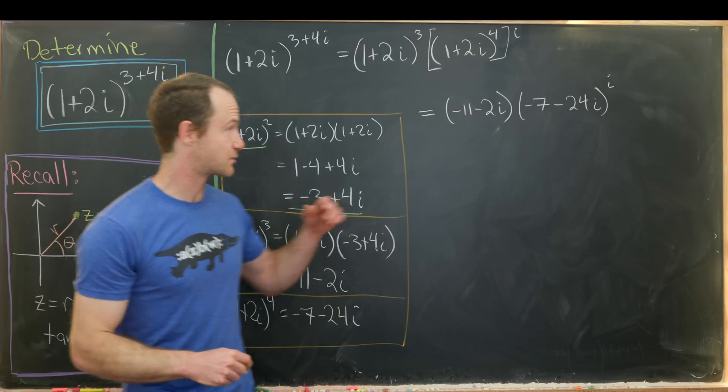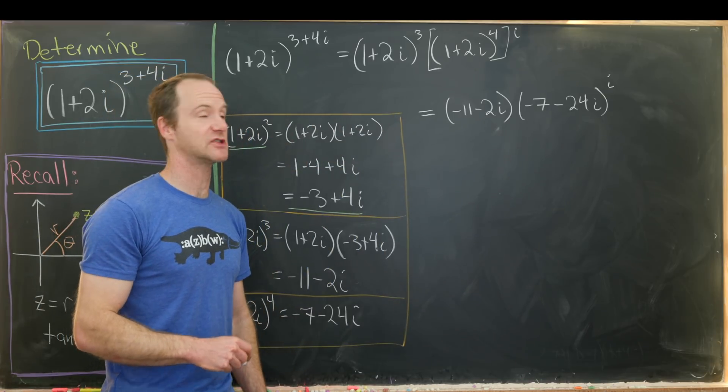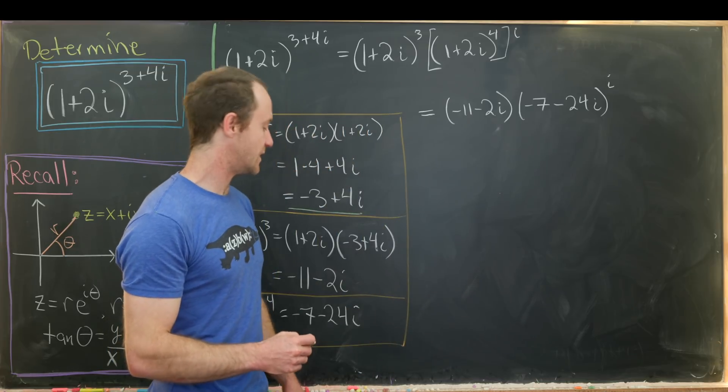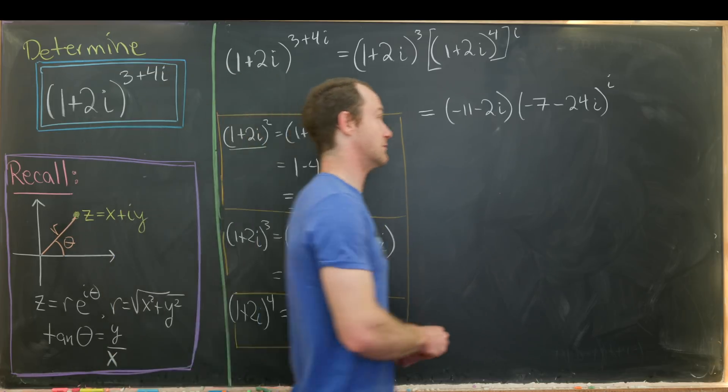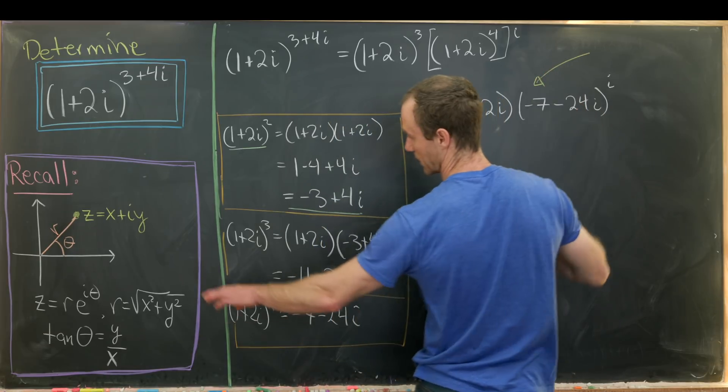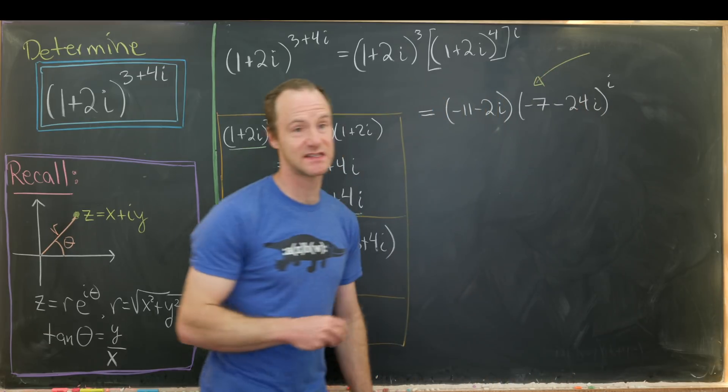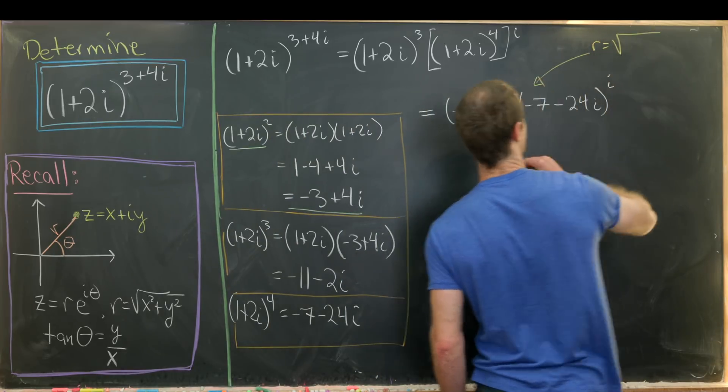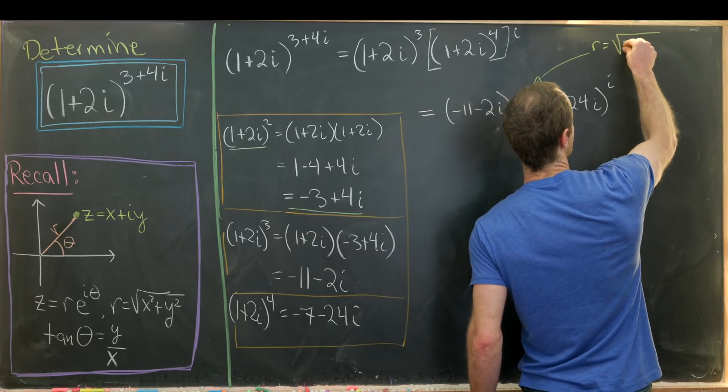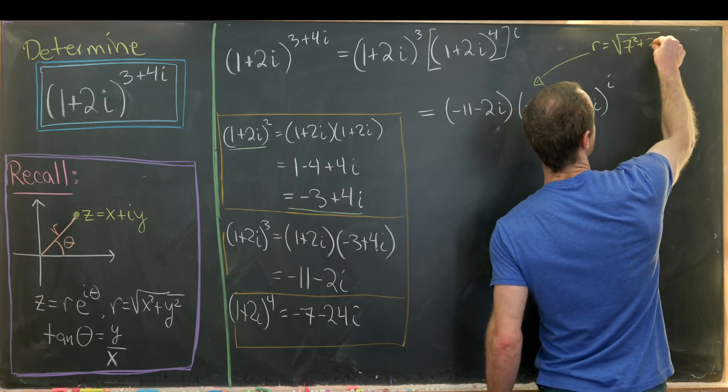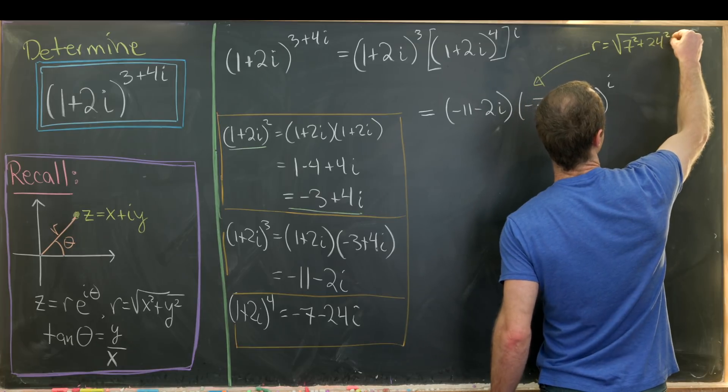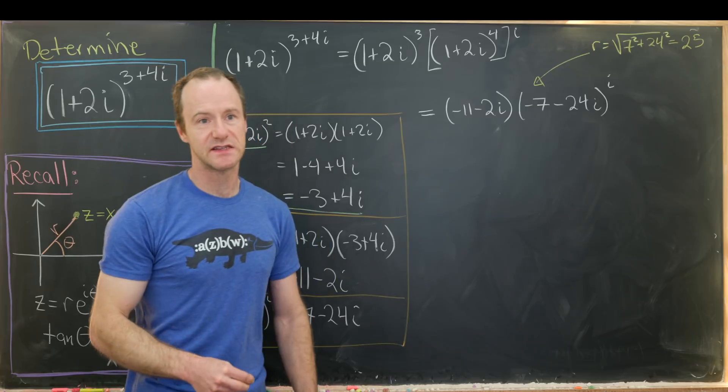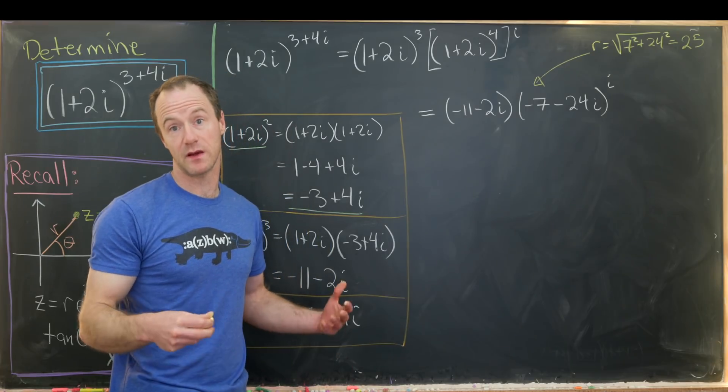Now we'd like to express this guy, this negative 7 minus 24, using our polar form here. So we'd first like to calculate the modulus or that component r over there, which is the distance from the origin. So let's notice in this case, the r is equal to the square root of 7 squared plus 24 squared. So a routine arithmetic problem tells you that that is 25. So I think that's pretty interesting. 7, 24, and 25 make a Pythagorean triple. I think that is pretty nice in this case.